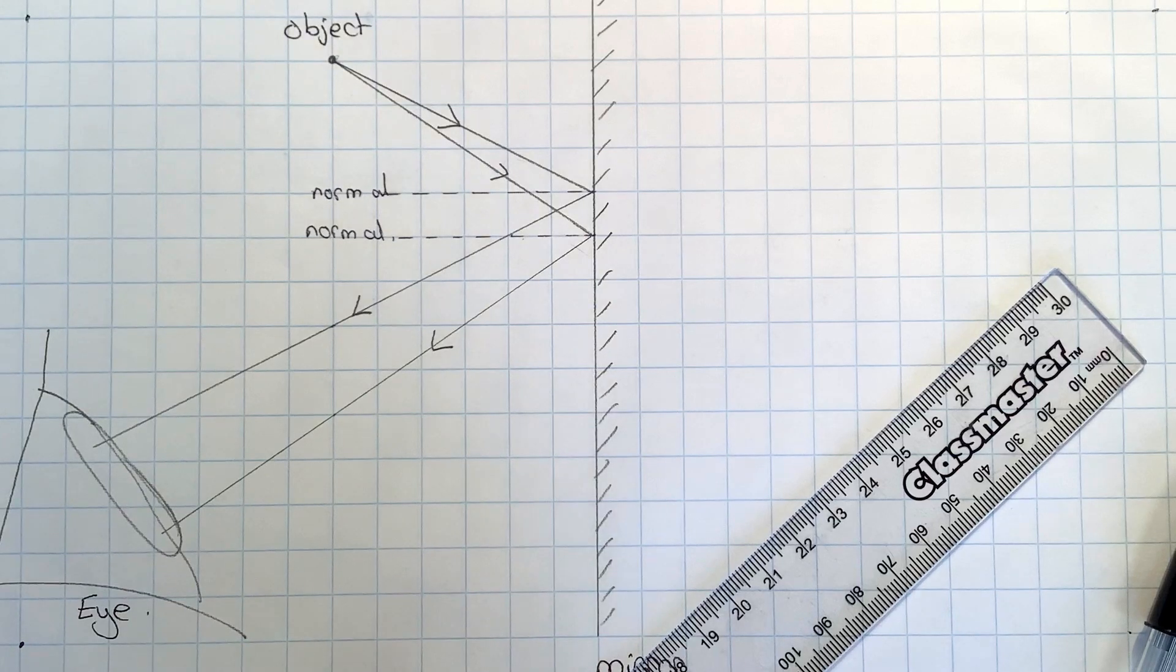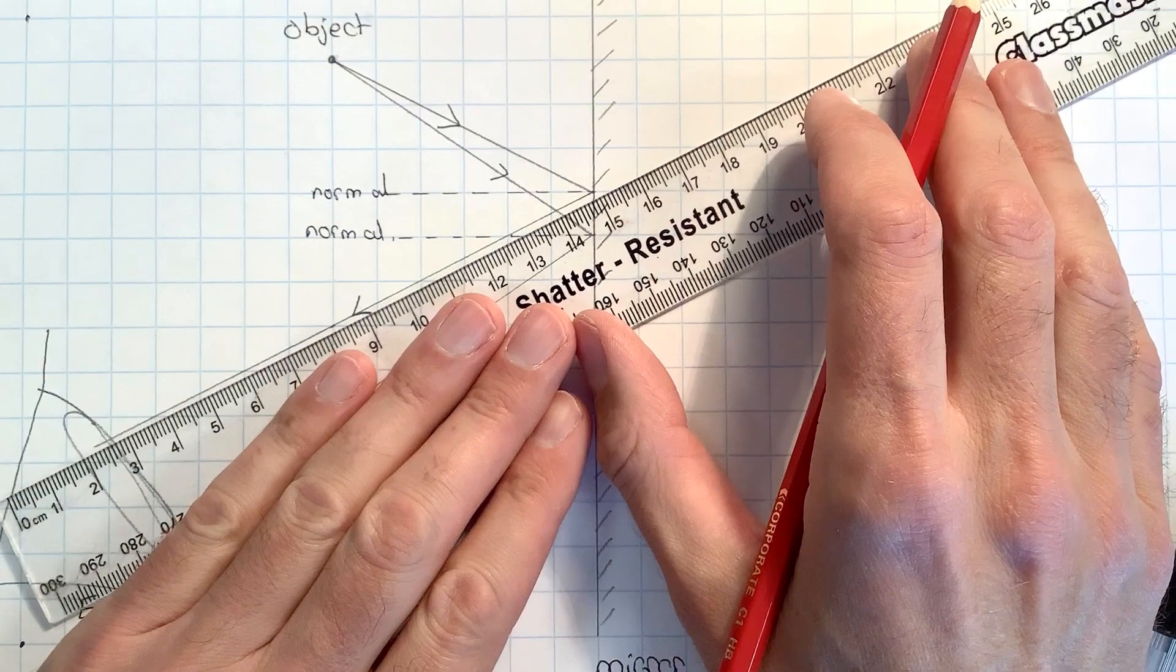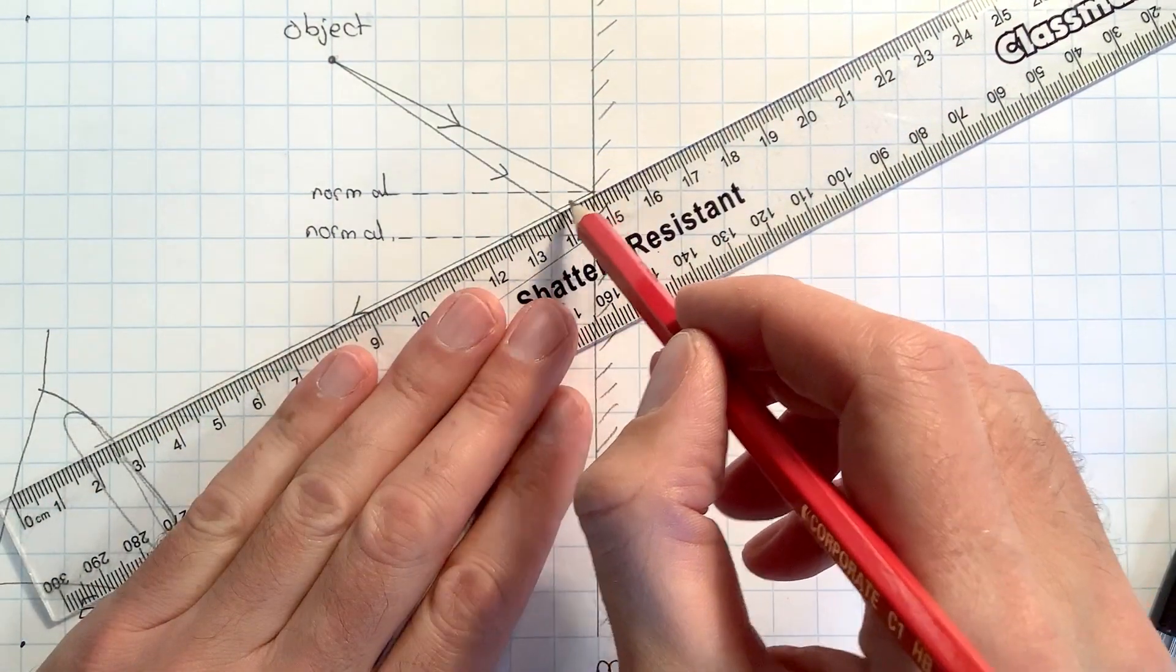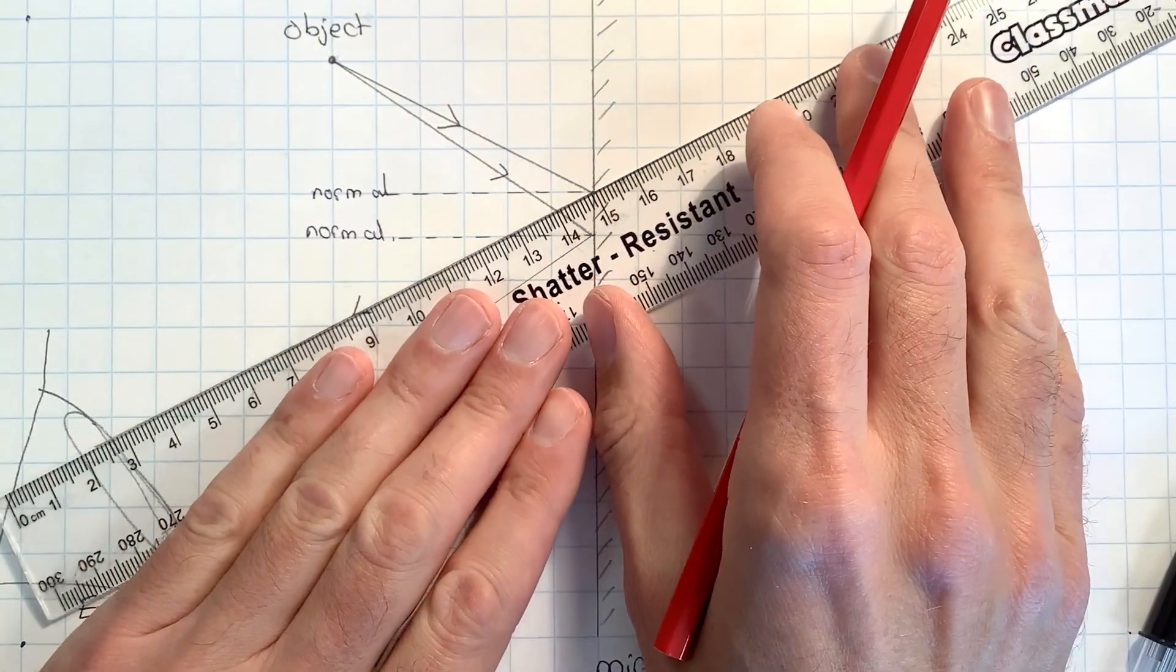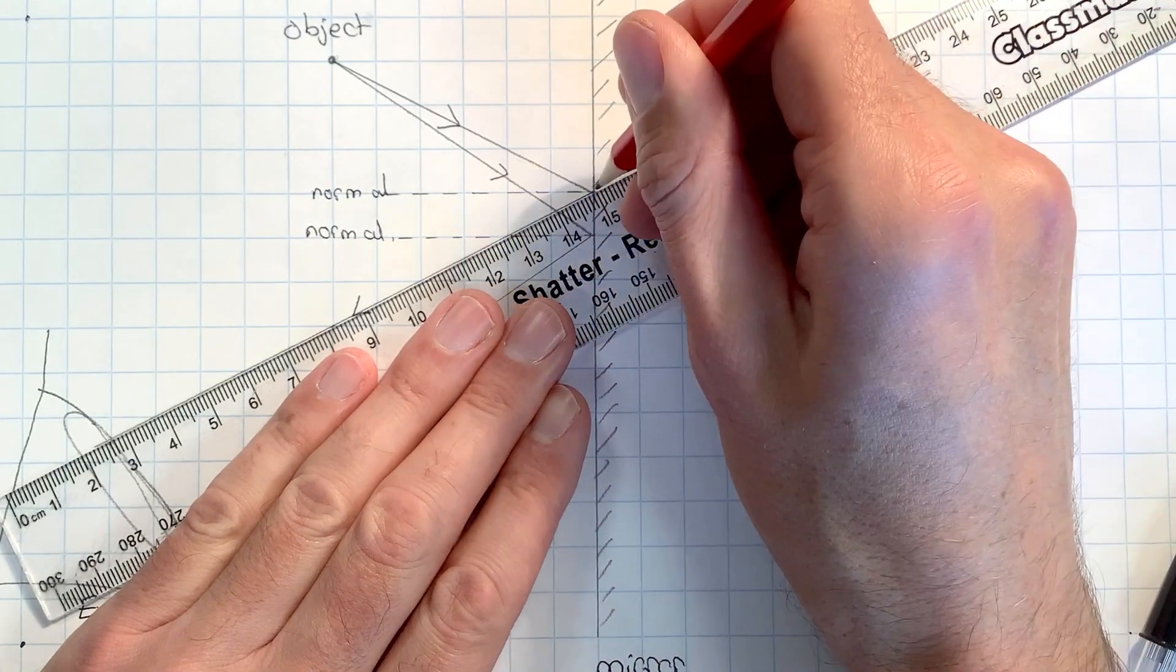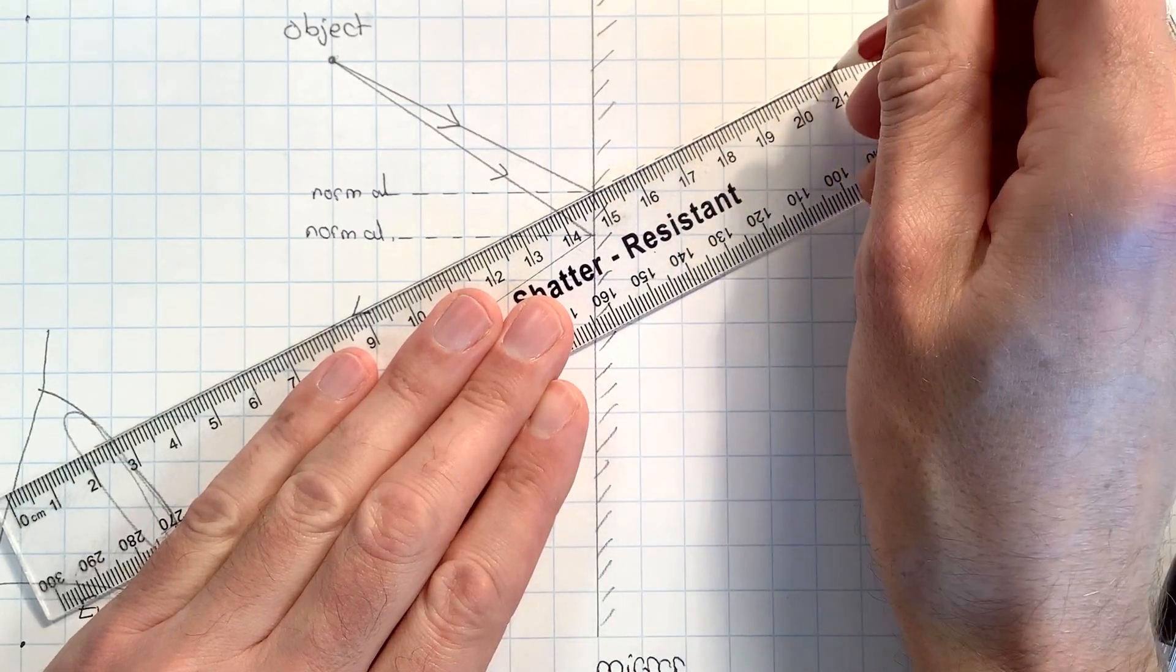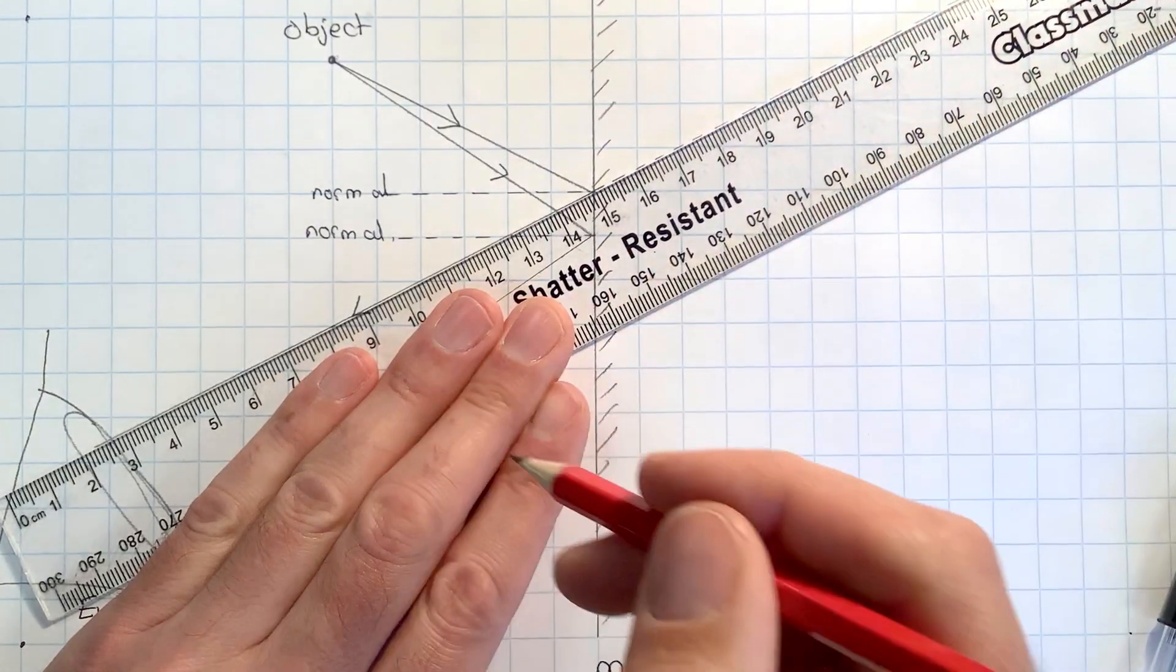Now we get to the really interesting part, which is how do we know where the image is formed. For this we have to realize that our brain is not very clever and it assumes that this light has always traveled in a straight line. So we have to line up our ruler with this reflected ray and once we have carefully lined up the ruler, we need to put in a dotted line which is called a virtual ray going back behind the mirror in the same direction that that reflected ray was coming from. We draw that as dotted because the ray has not actually done this.